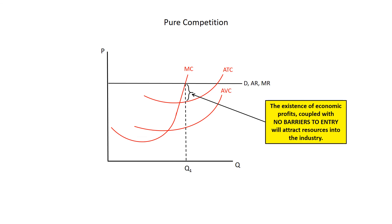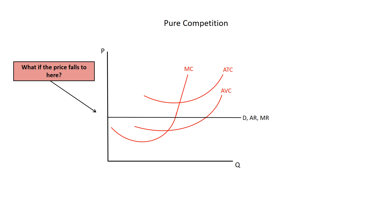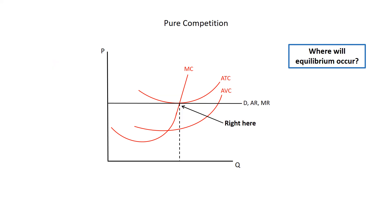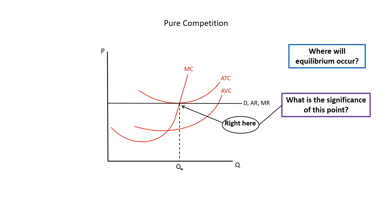The existence of economic profits coupled with no barriers to entry will attract resources into the industry. The market supply will rise and the product price and demand curve will fall. If the price were to fall far enough, firms would suffer economic losses and they would leave the industry. As they did, market supply would fall and the product price and demand curve would rise. Take a good long look at this graph — pause the video if you need to. Where will equilibrium occur? Right here. The profit-maximizing firm will produce this level of output where marginal revenue equals marginal cost.